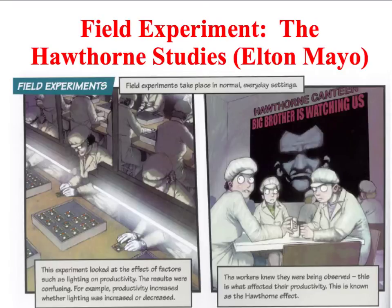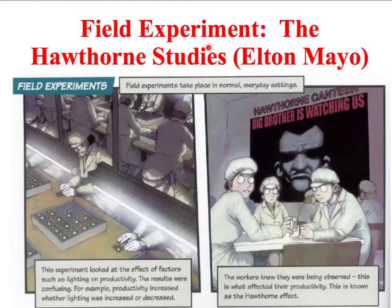If sociologists decide to use an experimental approach, they're more likely to use a field experiment, which takes place in somebody's natural environment. A very famous example is the work carried out by Elton Mayo. This involved the factory management of the Hawthorne Electrical Plant in Chicago hiring Mayo to study the links between working conditions and industrial output — they wanted to see what factors would make workers more productive.